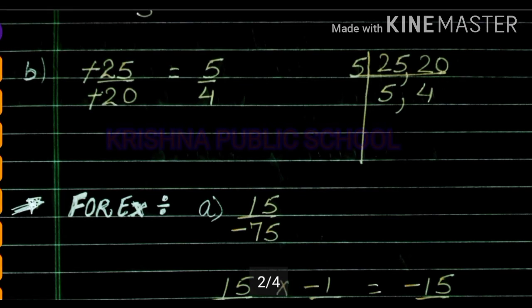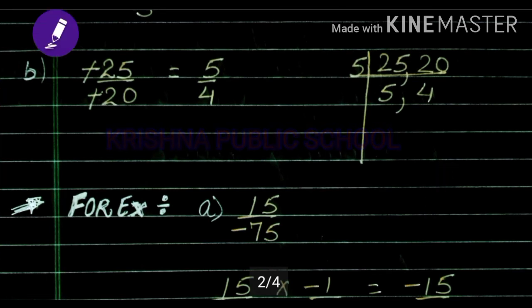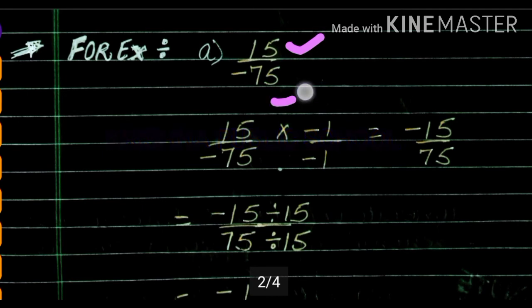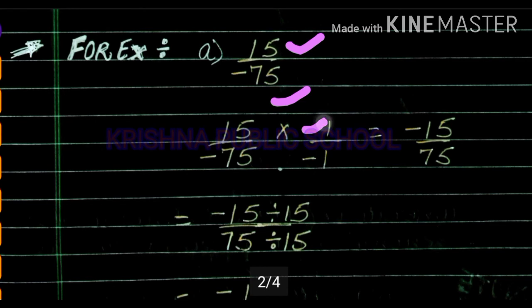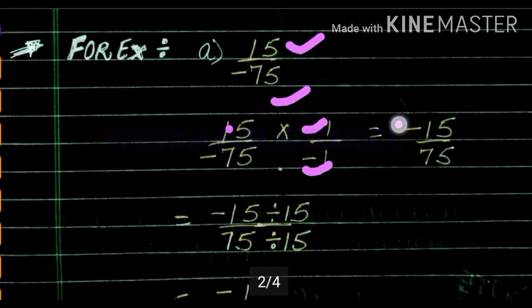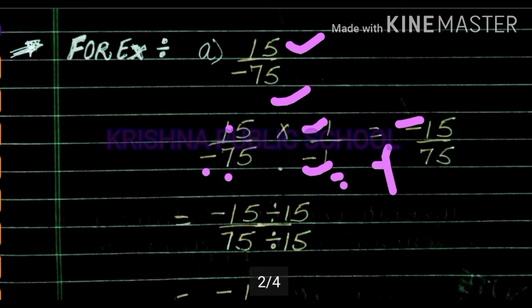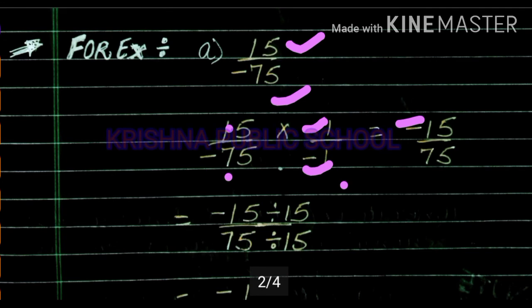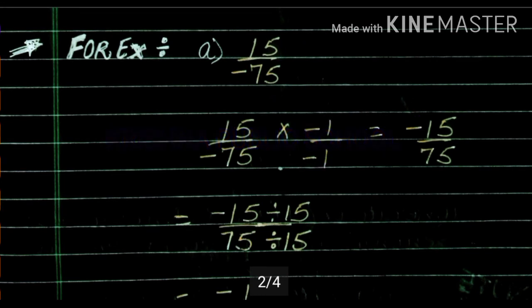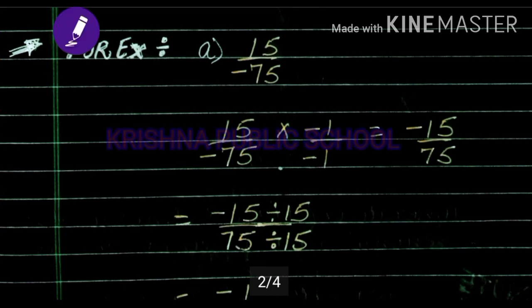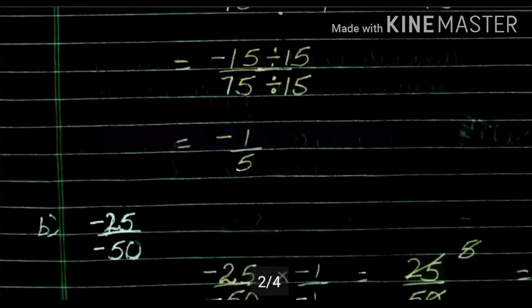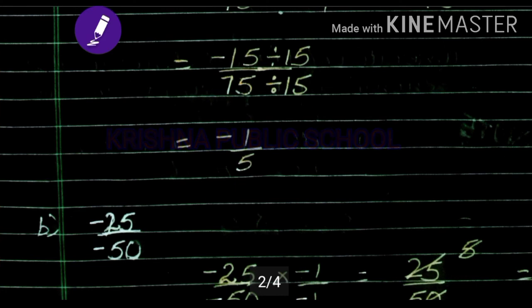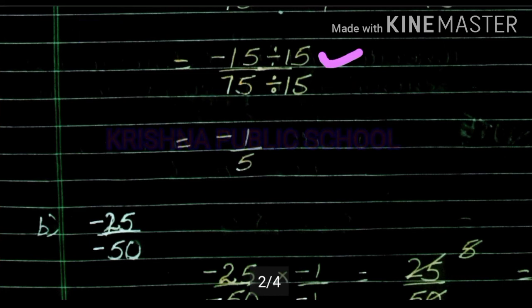Now let's take another example: 15 upon minus 75. Here the denominator is negative, so we need to make the denominator positive by multiplying both numerator and denominator by minus 1. Dividing, 15 by 75 simplifies with a common factor of 15, giving minus 1 upon 5 as the standard form.